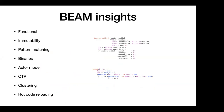The main constituents of the BEAM language include some core insights. It is a completely functional language with total immutability — once a variable has been assigned, it can never be changed.